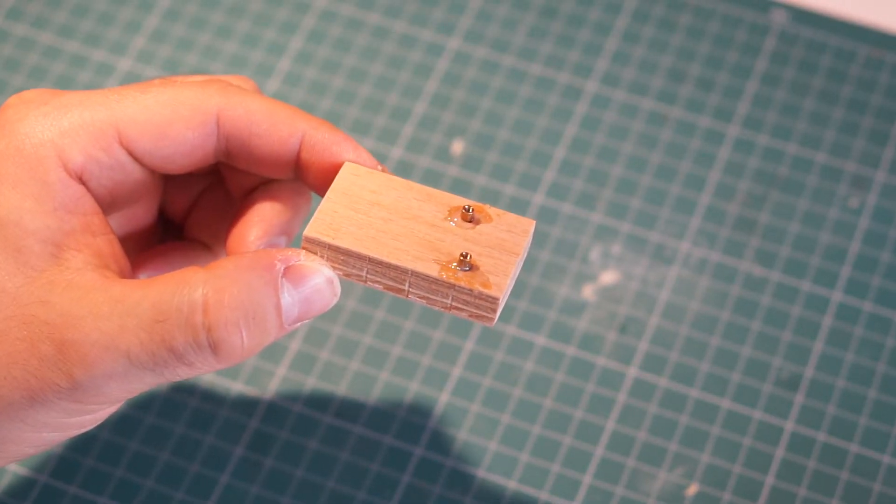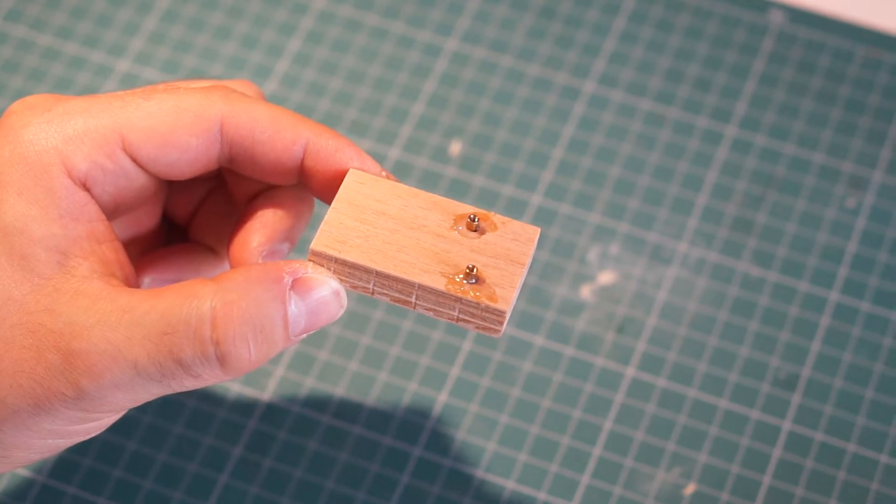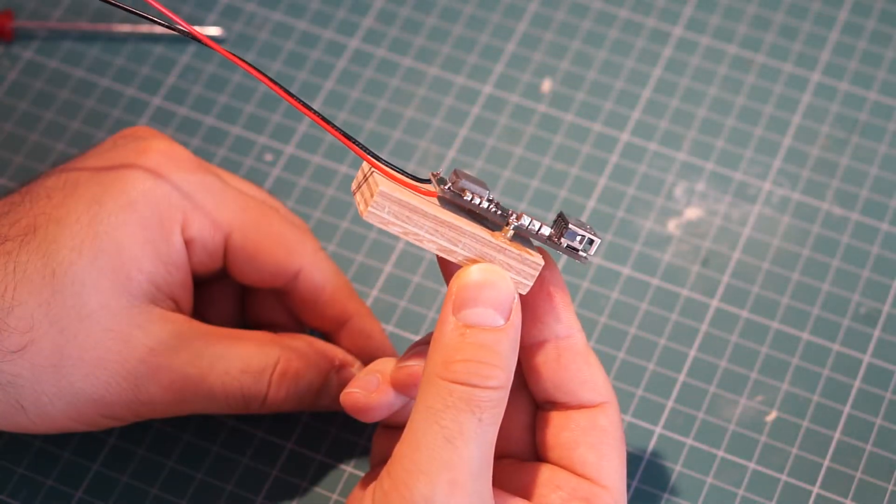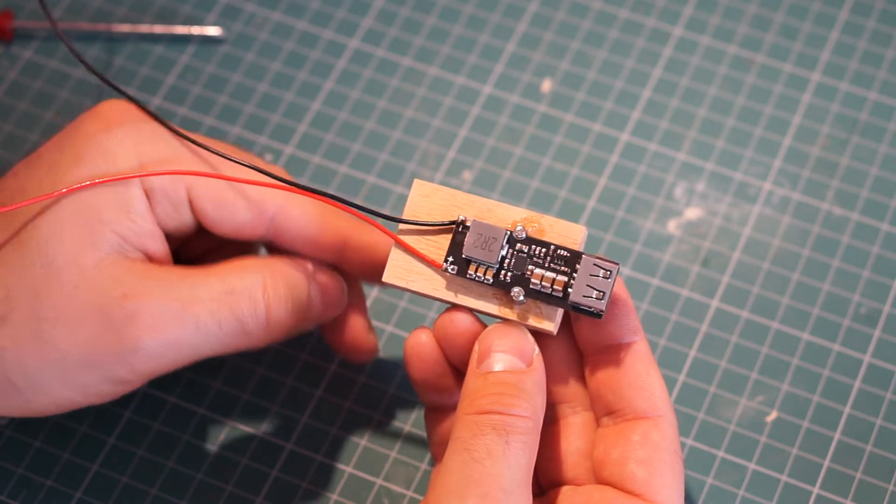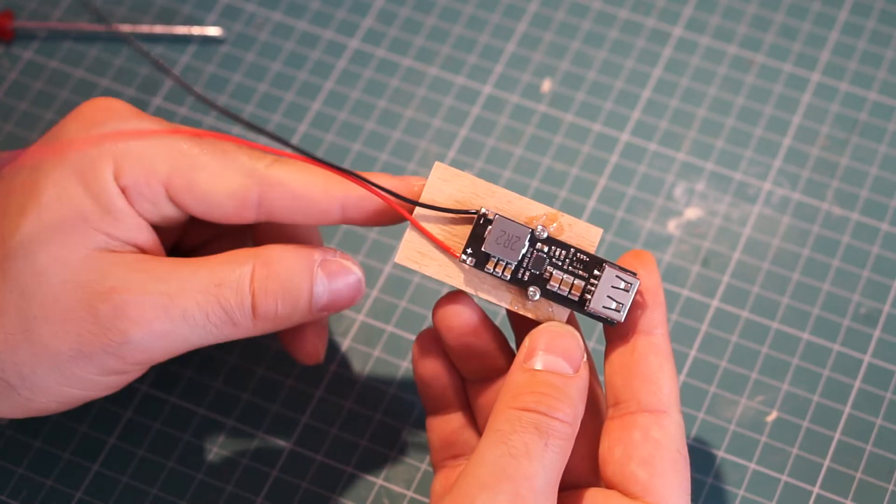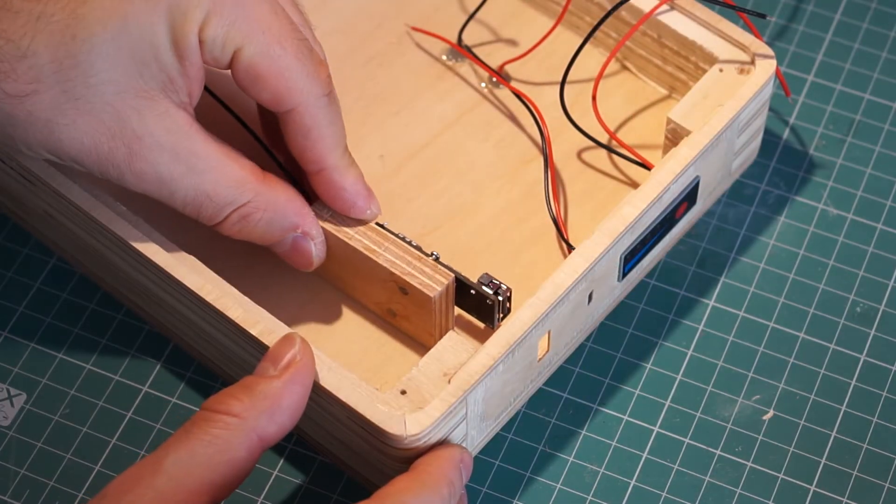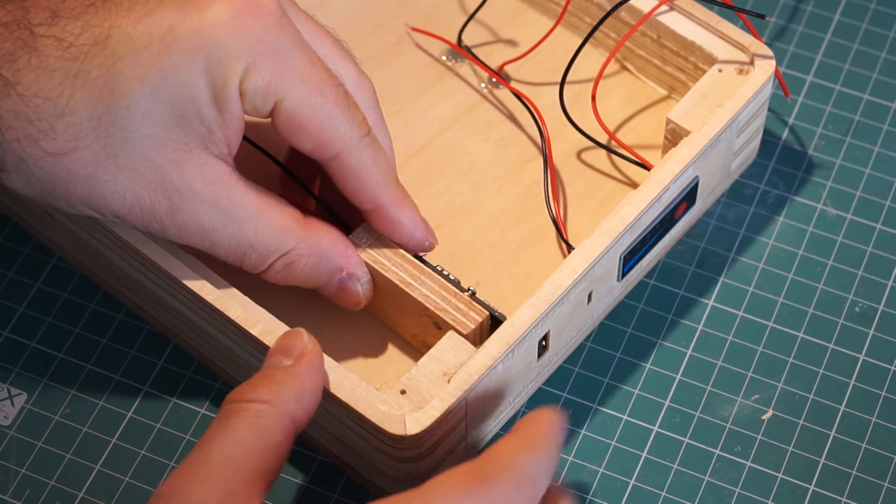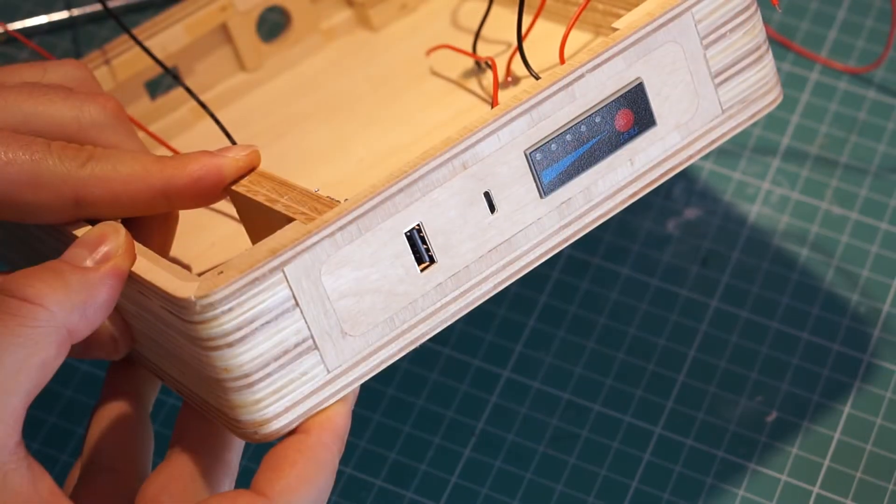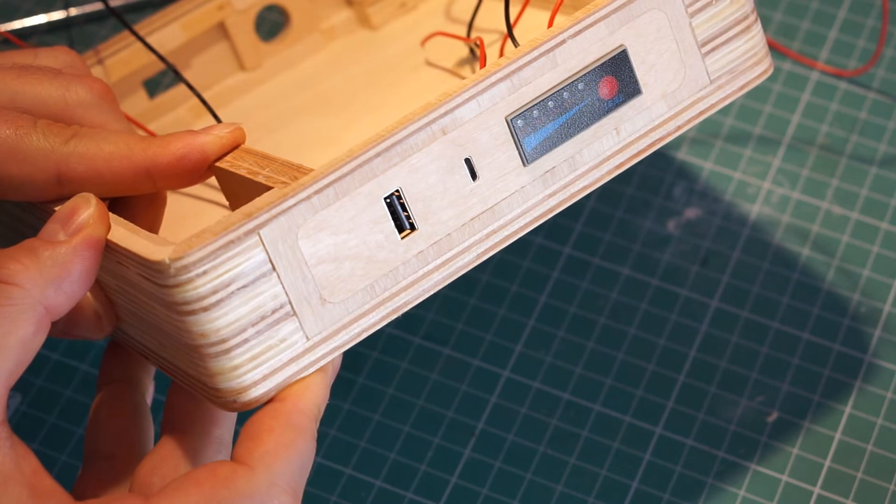For the USB output module, I glued two standoffs to a small piece of plywood. These standoffs are aligned to match two notches on the sides of the PCB. With the PCB mounted, I glued the piece of plywood in place after making sure that the USB port aligns perfectly with the cutout.